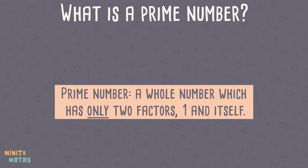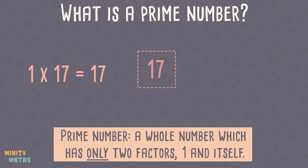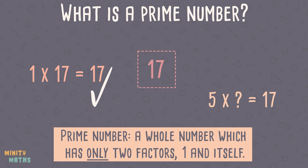Let's look at an example of a prime number. 17 is a prime number because we cannot multiply any other numbers together to make 17, except 1 times 17.